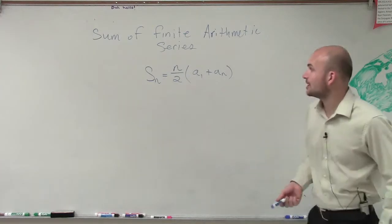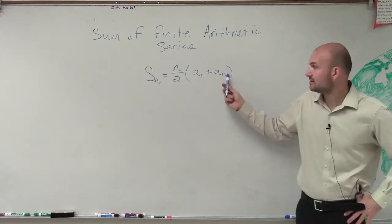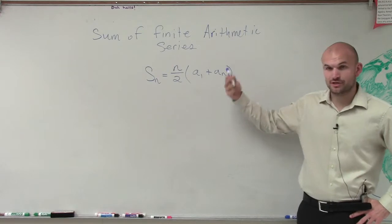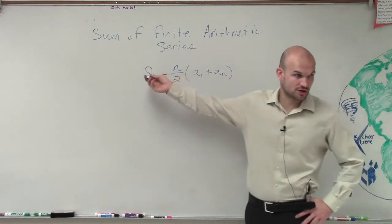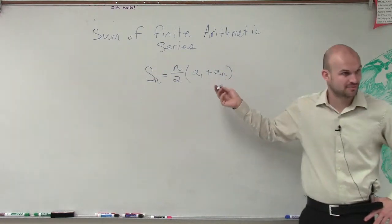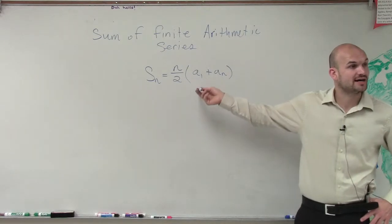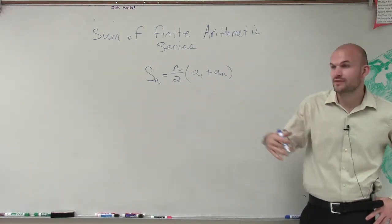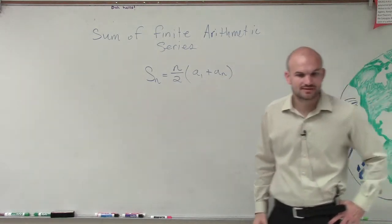So to find the sum, we need to be able to determine the nth term, the last term, the number of terms that it has, the value of that number of terms, and then also we need to find the first term. And then after that, what we'll simply do is be able to find the sum, all right?